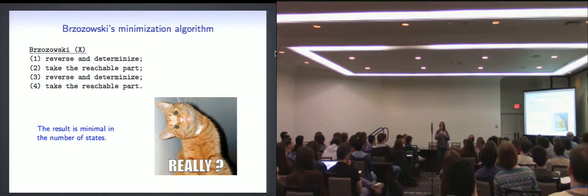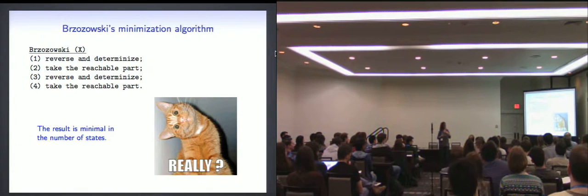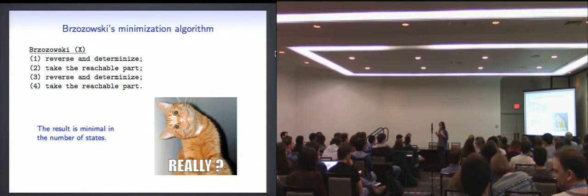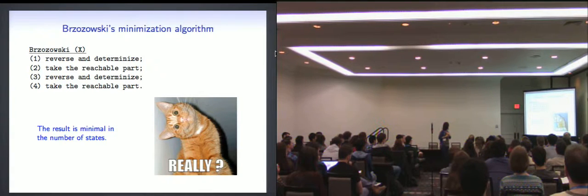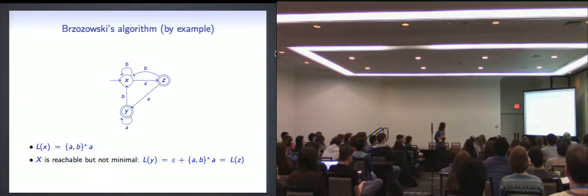And this is really like, I mean, first time I saw this, I was like, what? Seriously? I mean, so I did a few examples. And you know, it gave me the minimal automaton. So I started trusting it. And then I did a few more examples. And then I decided I had to prove the correctness myself. Otherwise, I wouldn't believe it. So here's an example so that you believe me with one example. Proof by example.